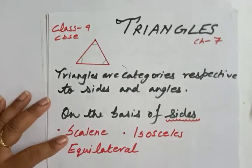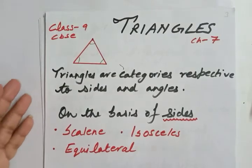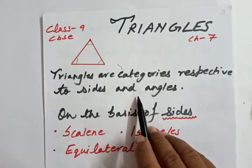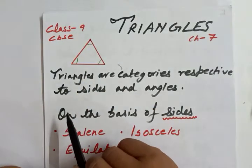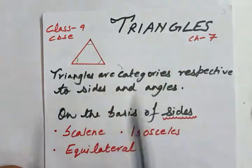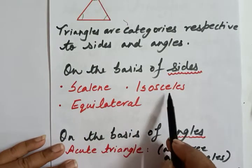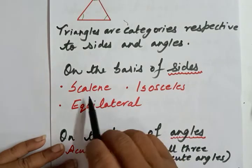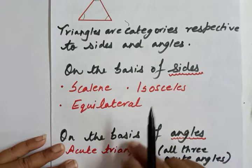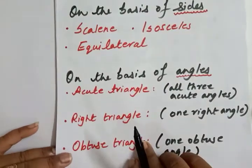Now let's come to the chapter Triangles of Class 9th, which is based on the congruency of triangles. First, let's understand what triangles are - as you already studied in Classes 7 and 8. Triangles are categorized with respect to sides and angles. On the basis of sides, we have three types: scalene - where all three sides are unequal; isosceles - where two sides are equal; and equilateral - where all three sides are equal.